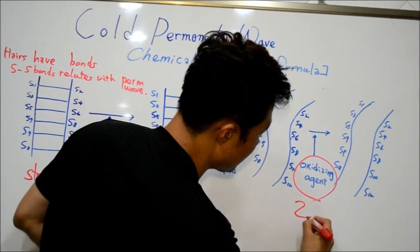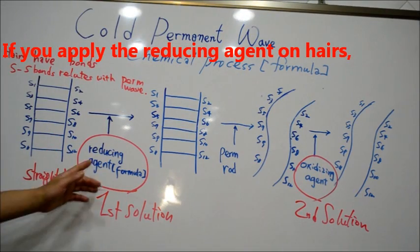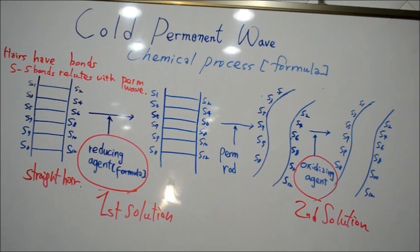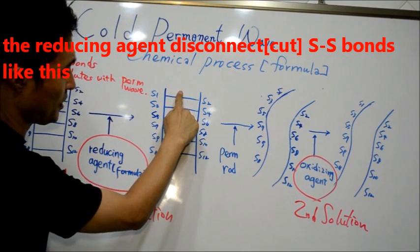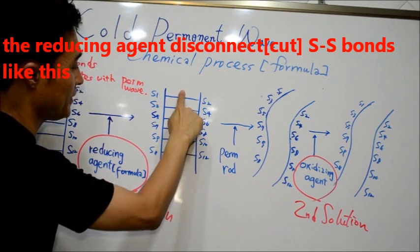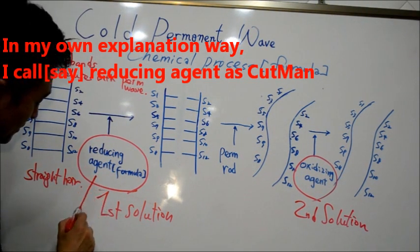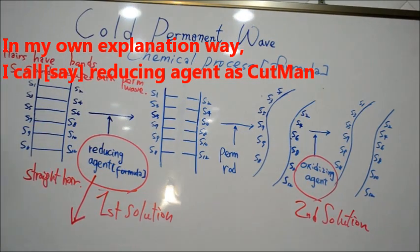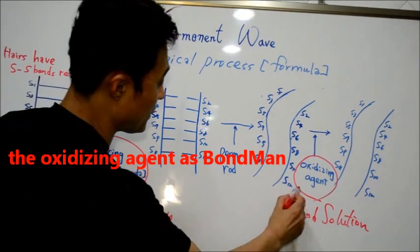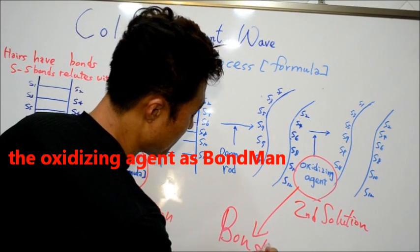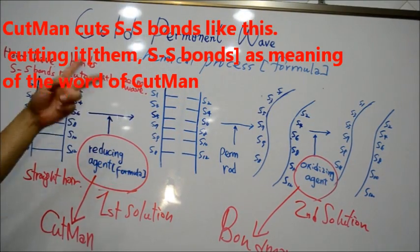And second solution is oxidizing agent. If we apply reducing agent, it disconnects the bonds. Meaning you cut the S-S bonds like this. In my own expression, reducing agent cuts the bonds. And oxidizing agent reconnects them. Cutting the S-S bonds.